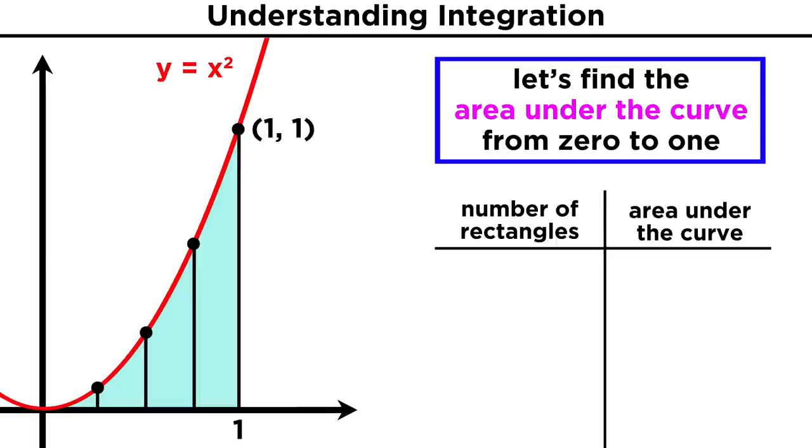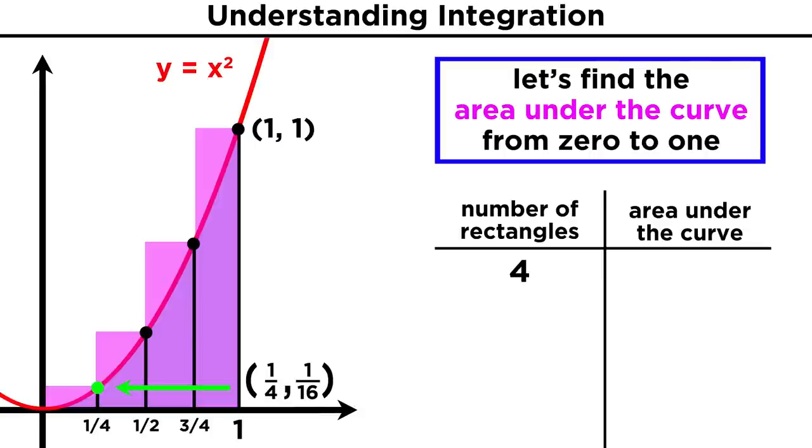First, let's chop this area up into four sections, from zero to one fourth, then to one half, then to three fourths, then to one. We can approximate each of these with a rectangle, which is useful, because it will be easy to get the areas of these rectangles. Each of them has a base of one fourth, and we can get the heights by using the function. The x coordinate of this point is one fourth, and every point on this curve has the coordinates x, x squared. So, the height of this first rectangle must be one fourth squared,